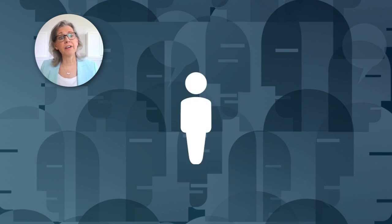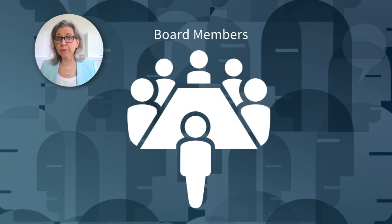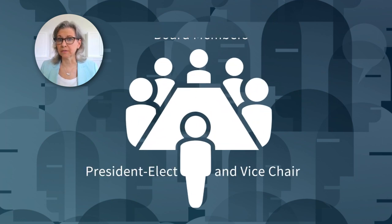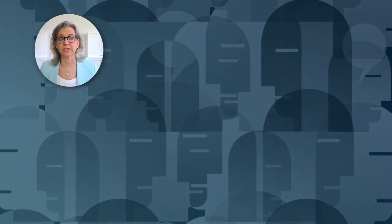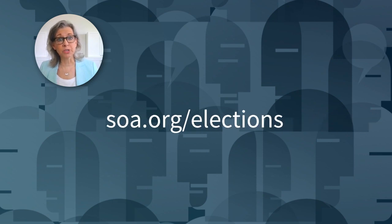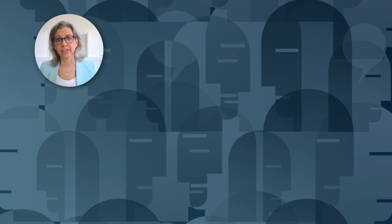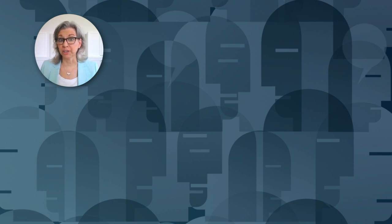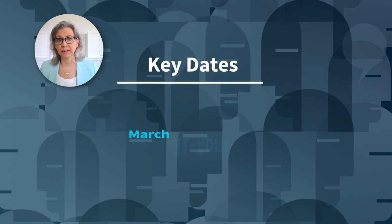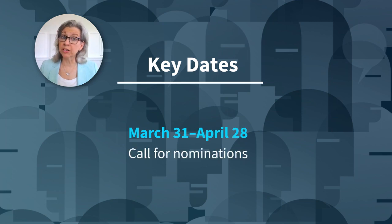Each year, five new board members and the president-elect are selected by the membership of the organization. You can find the descriptions for board members and president-elect at soa.org/elections. Key dates for the 2023 SOA elections are also available there. From March 31st through April 28th will be the call for applications for the nominating committee to review.